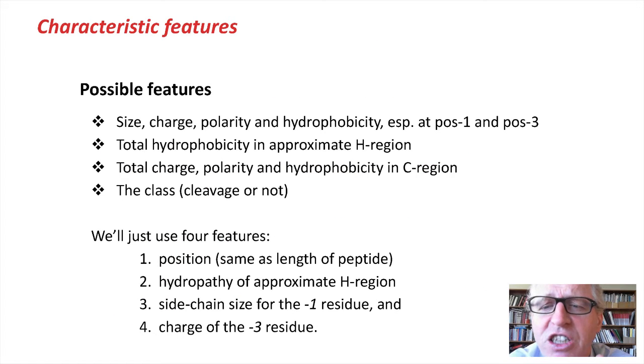So the possible features we might include are the size, the charge, the polarity, and the general hydrophobicity of regions of the signal peptide, especially at position minus one and minus three, because they seem to be quite distinct. We might compute the total hydrophobicity in an approximate H region, just about 5 to 15 upstream of the cleavage site. We might look at the total charge polarity and hydrophobicity in the C region and so on, and then record whether or not that's the cleavage site. So for a couple of randomly chosen residues which are not the cleavage site, we'll compute these same features.